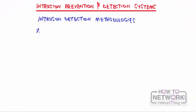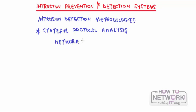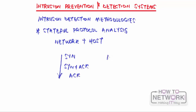The third type is stateful protocol analysis. It is similar to deep packet inspection but is not restricted to network activities — it also covers host activities. For example, it knows the TCP three-way handshake is SYN, SYN-ACK, ACK in that order. If an ACK is seen before a SYN, it knows there is an attack — meaning the protocol is being used in a way it was not intended.